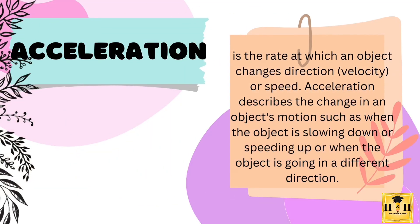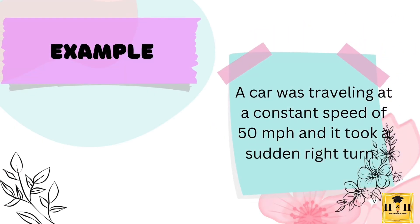Acceleration is the rate at which an object changes direction, velocity, or speed. Acceleration describes the change in an object's motion, such as when the object is slowing down or speeding up, or when the object is going in a different direction. For example, a car was traveling at a constant speed of 50 miles per hour, and it took a sudden right turn. This is acceleration because the direction of the car changes.